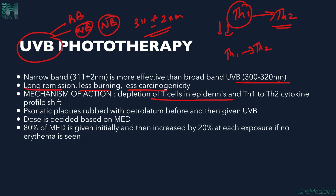Psoriatic plaques should be rubbed with petrolatum before giving phototherapy, and then UVB is administered. The dose is based upon the minimal erythema dose (MED). You give a series of exposure frequencies to the patient and observe how much erythema, blistering, or reaction develops. A faint erythema is the endpoint — that is the minimal erythema dose.